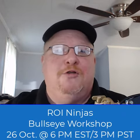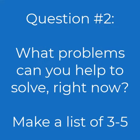Hey guys, day two question two coming at you right now for the ROI Ninjas Bullseye Workshop. Add this to your notes from yesterday to keep all this stuff together, and we're going to actually be using this to develop your bullseye. The question for today is: list out what problems can you solve with your products or services.